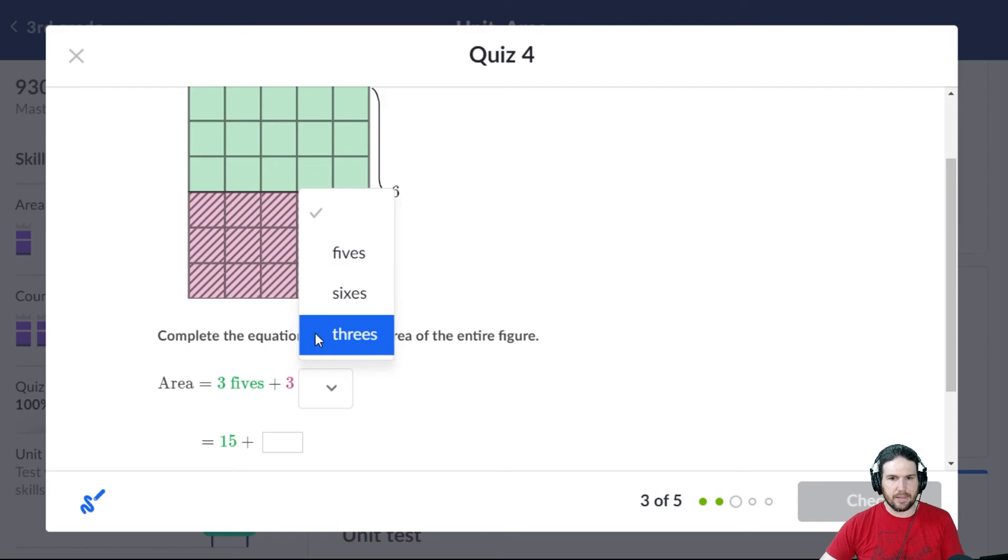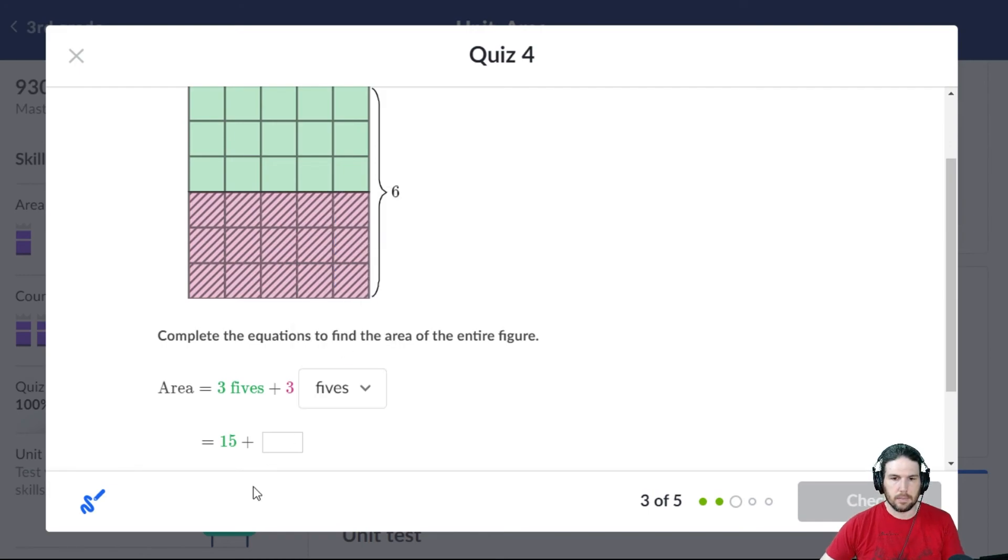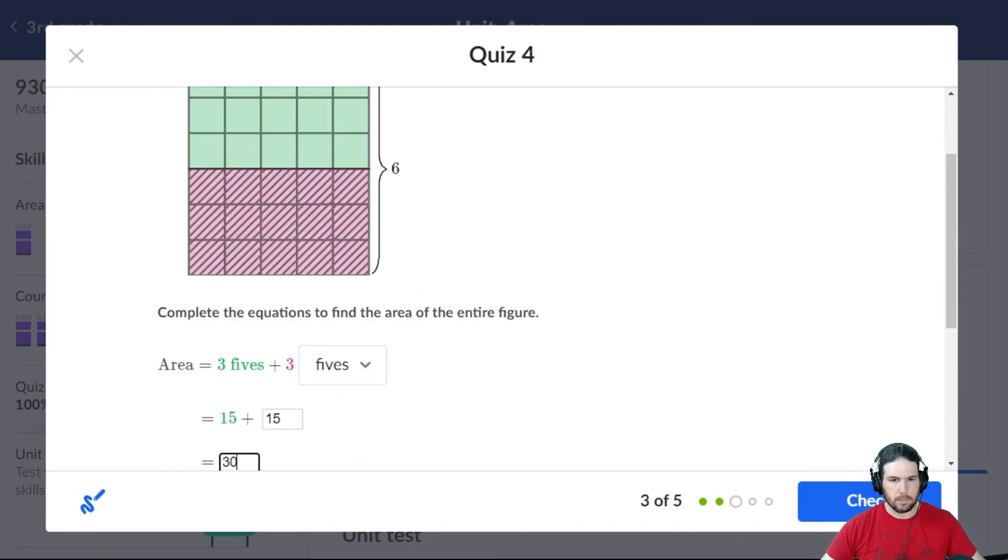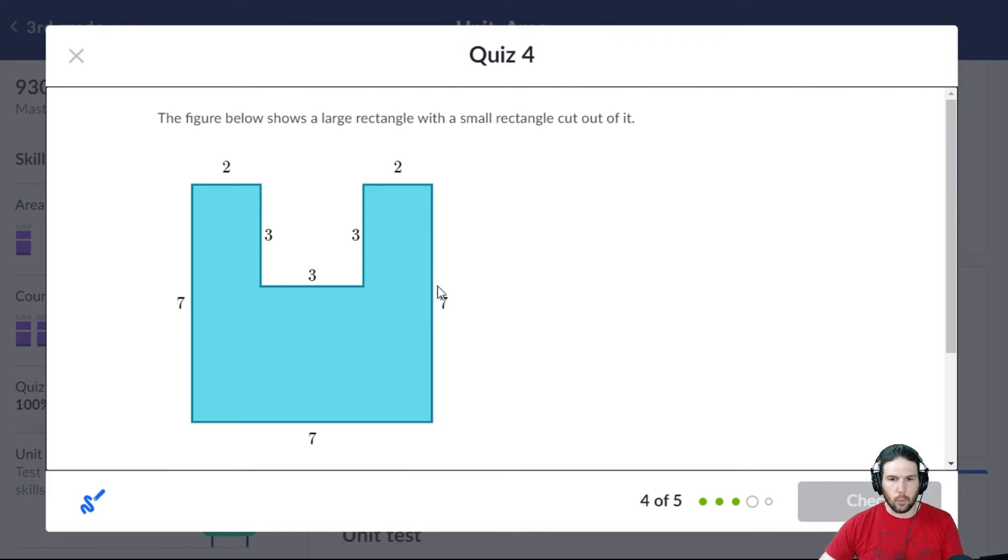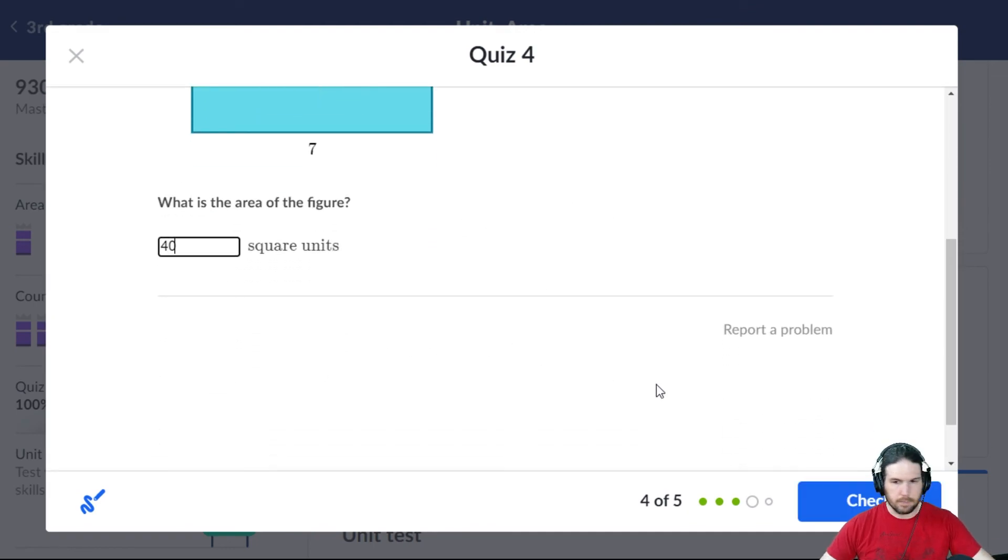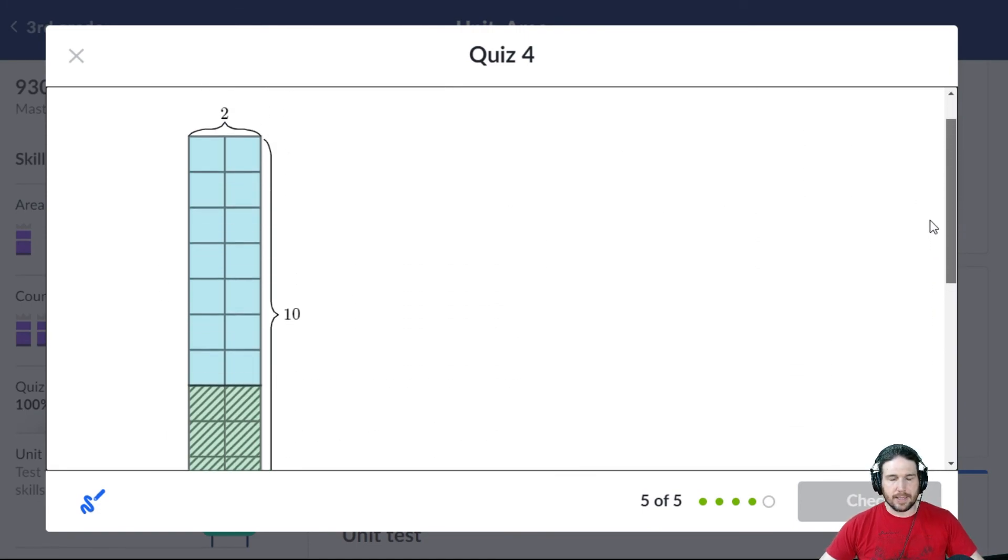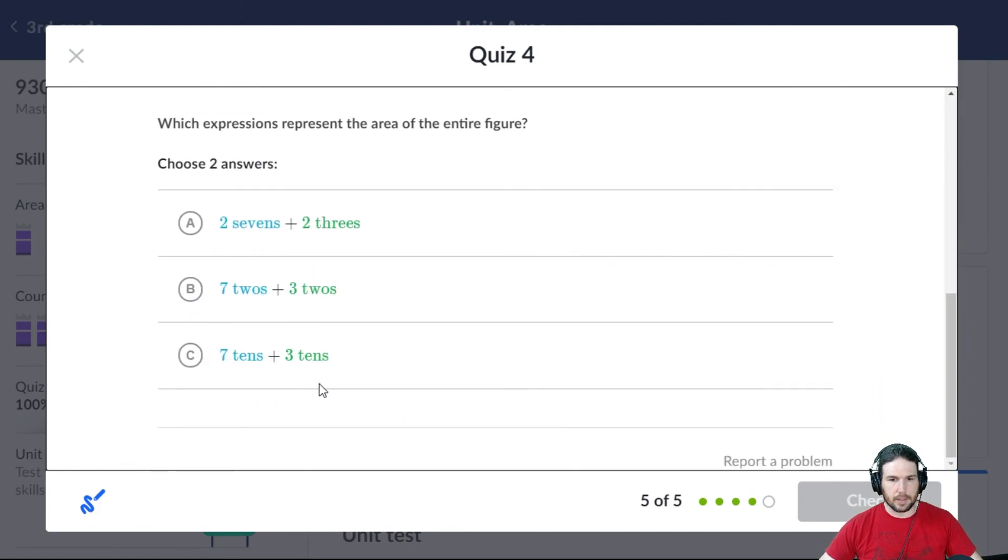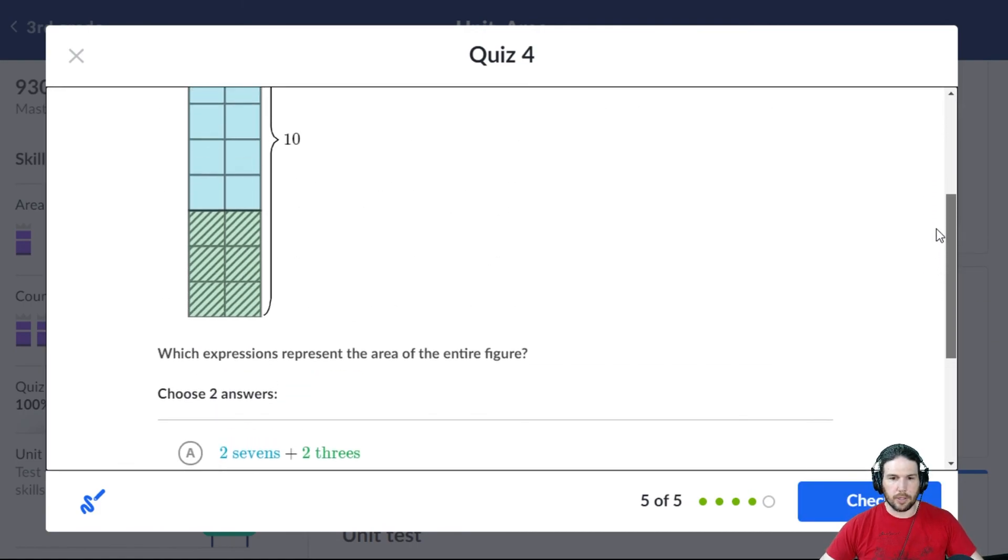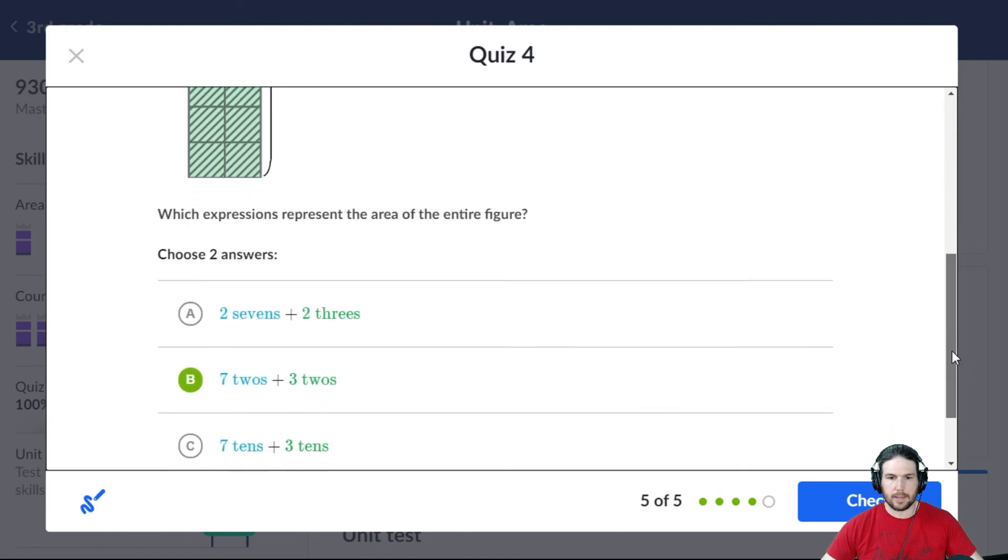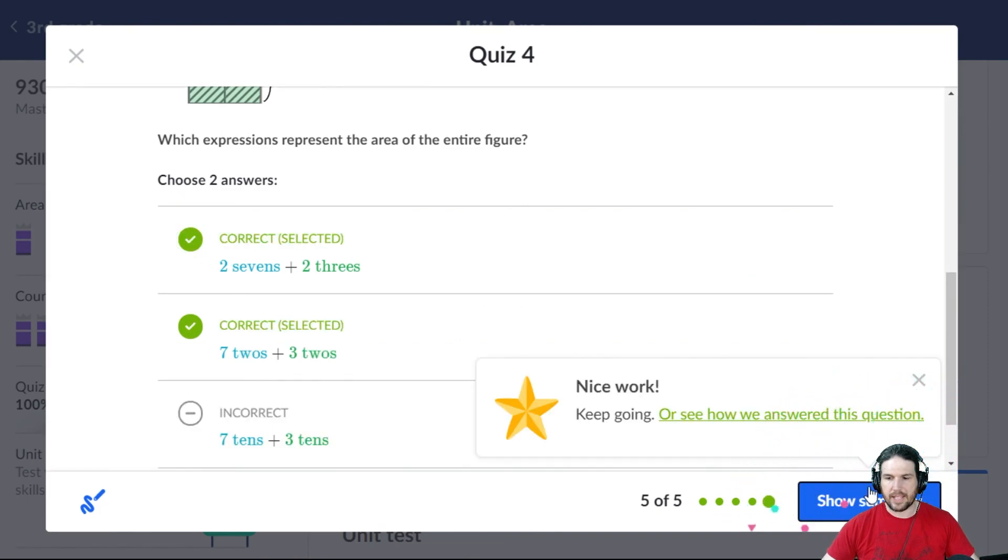Here we have three fives and three fives to make six fives, which makes 15 plus 15, which is 30. And finally, we've got a 7 by 7, which is 49, minus a 3 by 3, which is 9. 49 minus 9 is 40. And then finally, it looks like we've got seven twos and three twos. Or we could also call it two sevens and two threes. That is also correct.